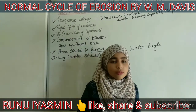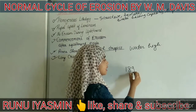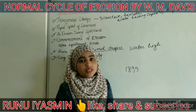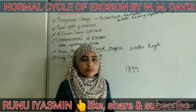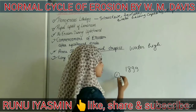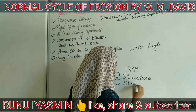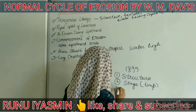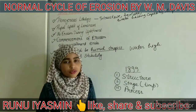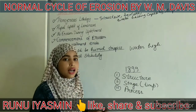Now understand the theory. First, W.M. Davis is an American geologist who postulated his theory in the year 1899. He gave three factors which he said are the main contributors responsible for the cycle of erosion — they determine the intensity of the erosion process. The first factor is structure, the next is stage or time, and the third is process. He gave a very famous statement that landform is the function of structure, process, and stage — these three are the main factors that control the erosion process.